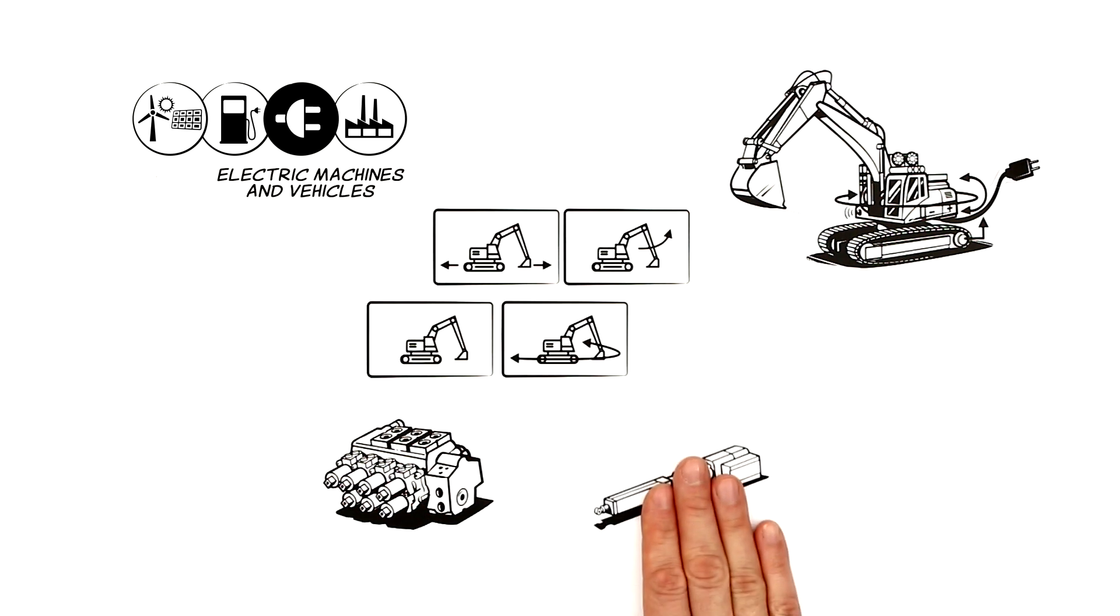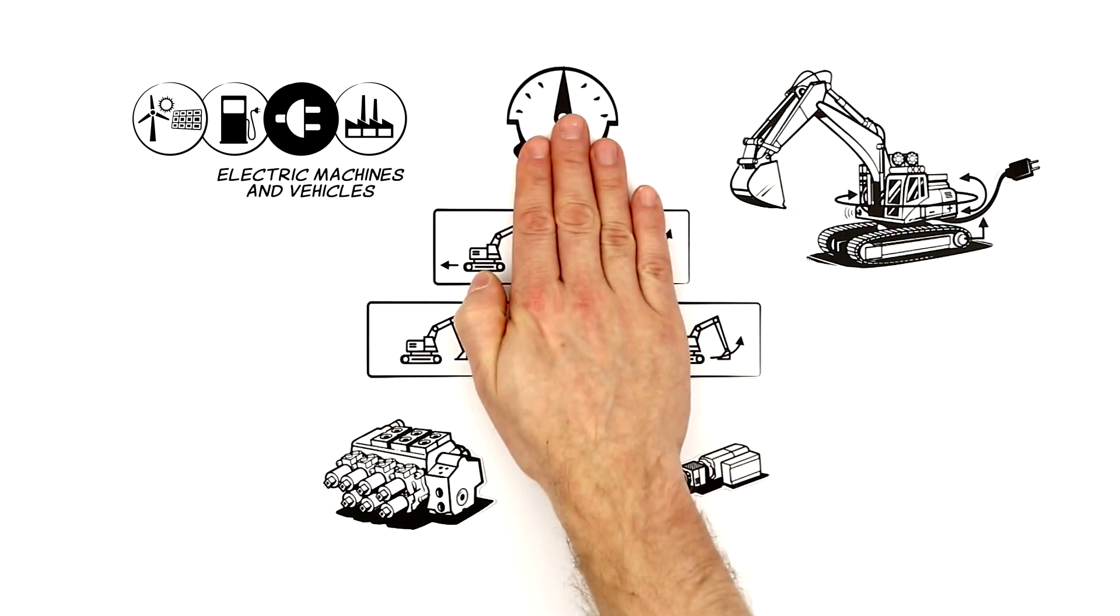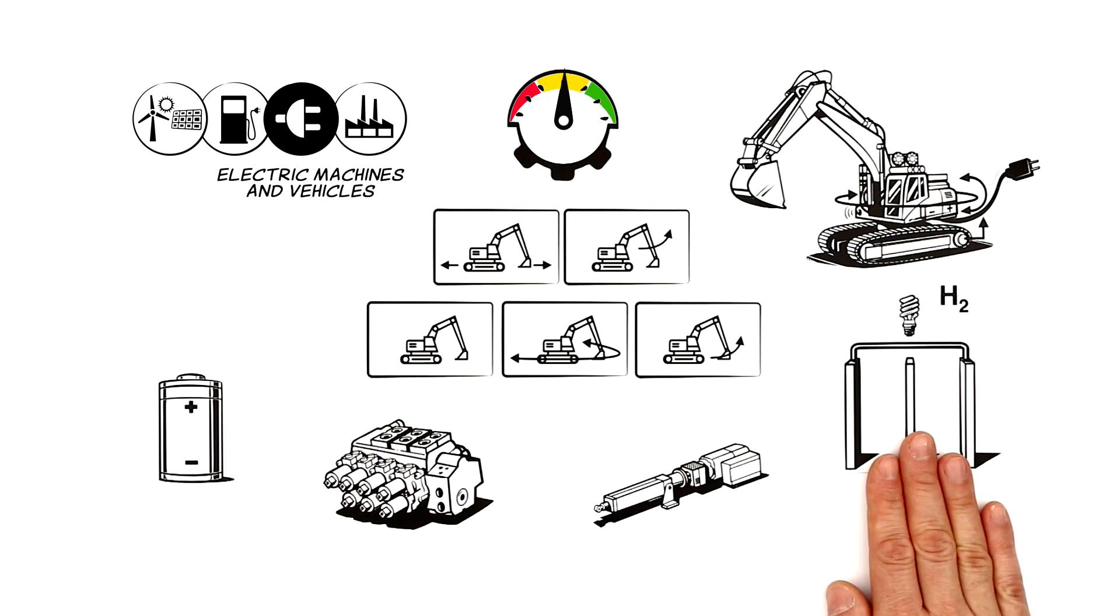In the third area, Hydac looks at how a machine changes when an electric drivetrain is added. This also applies to the current hydraulic operating functions. Their level of efficiency has a direct impact on the battery or the fuel cell.